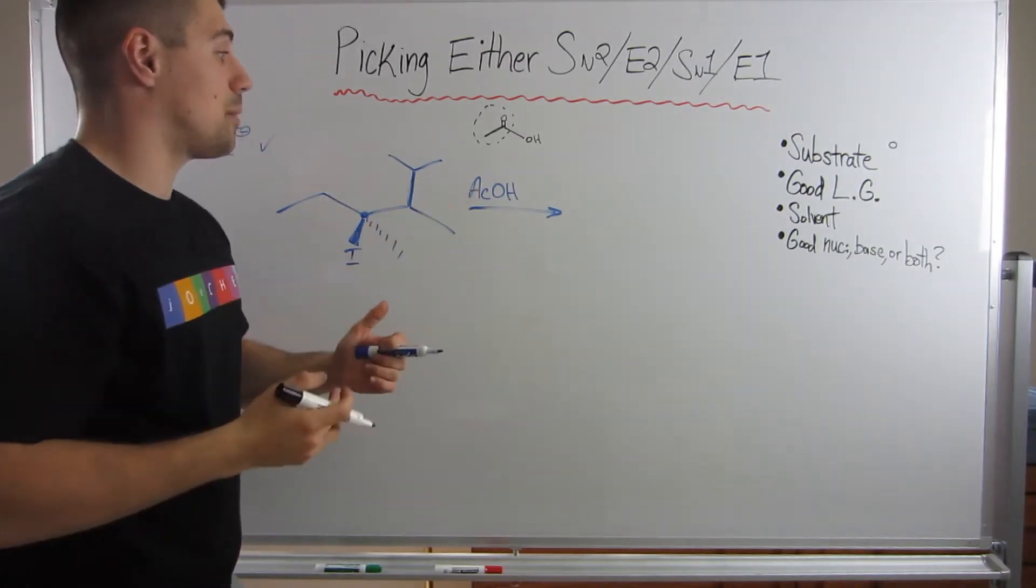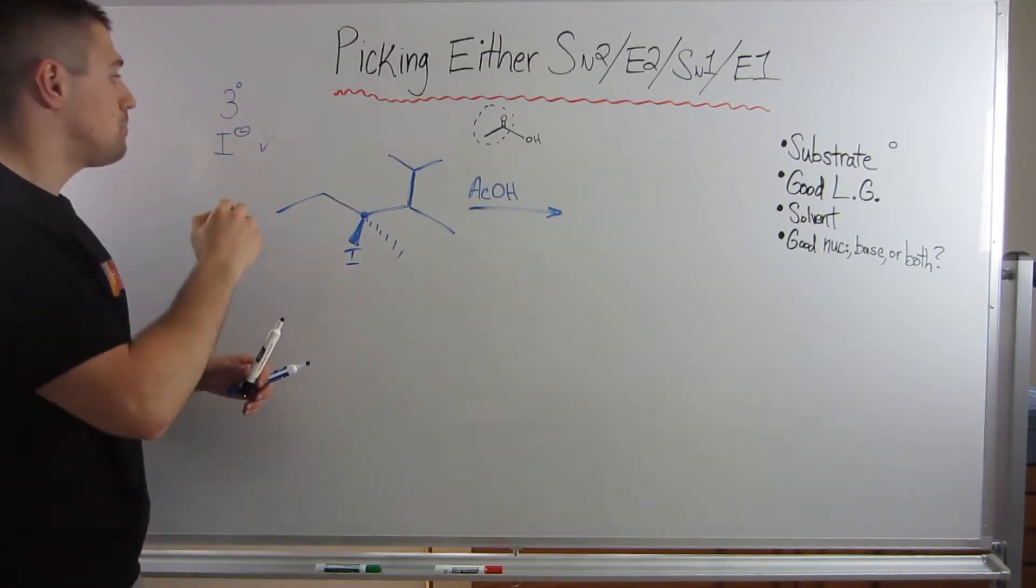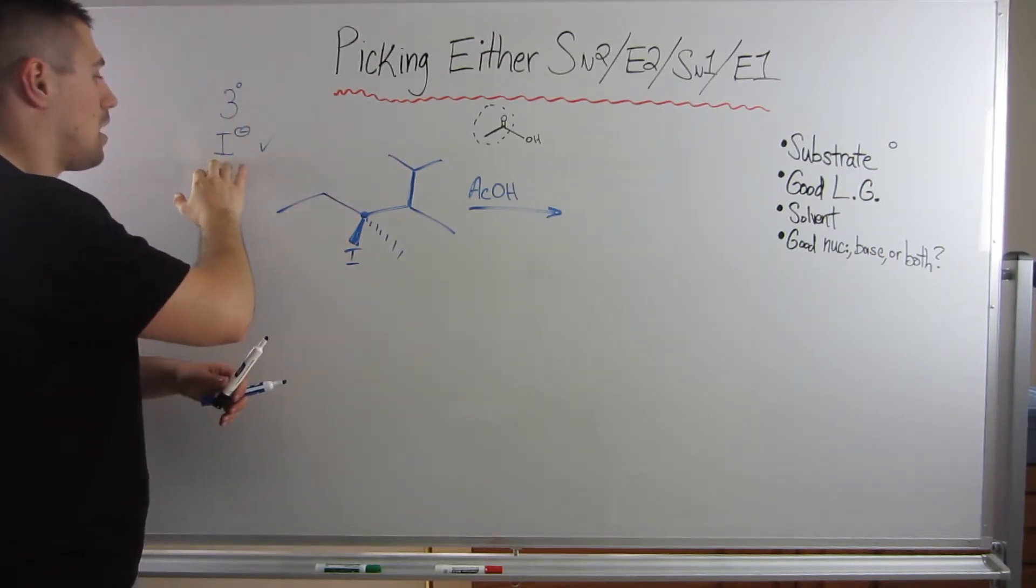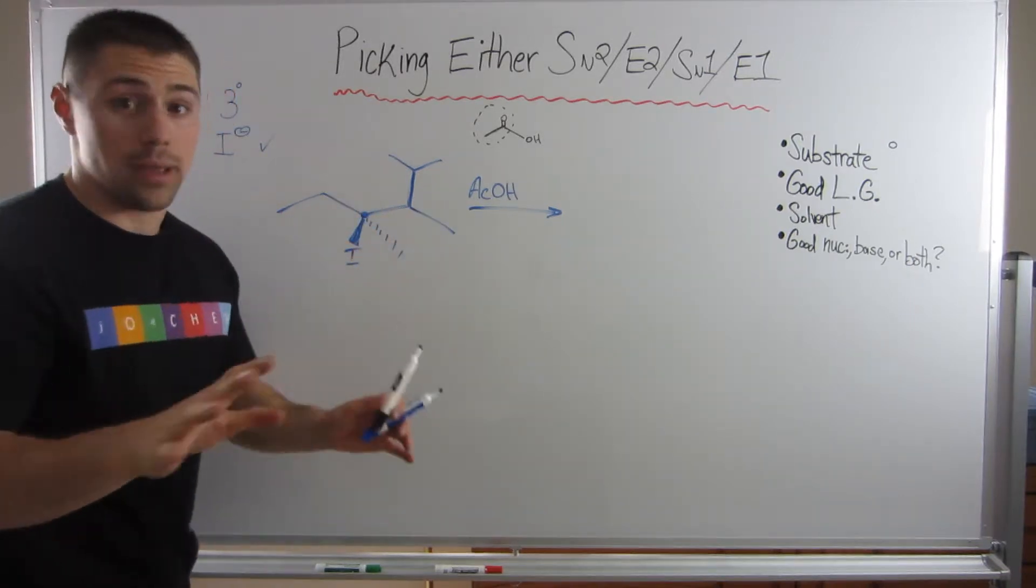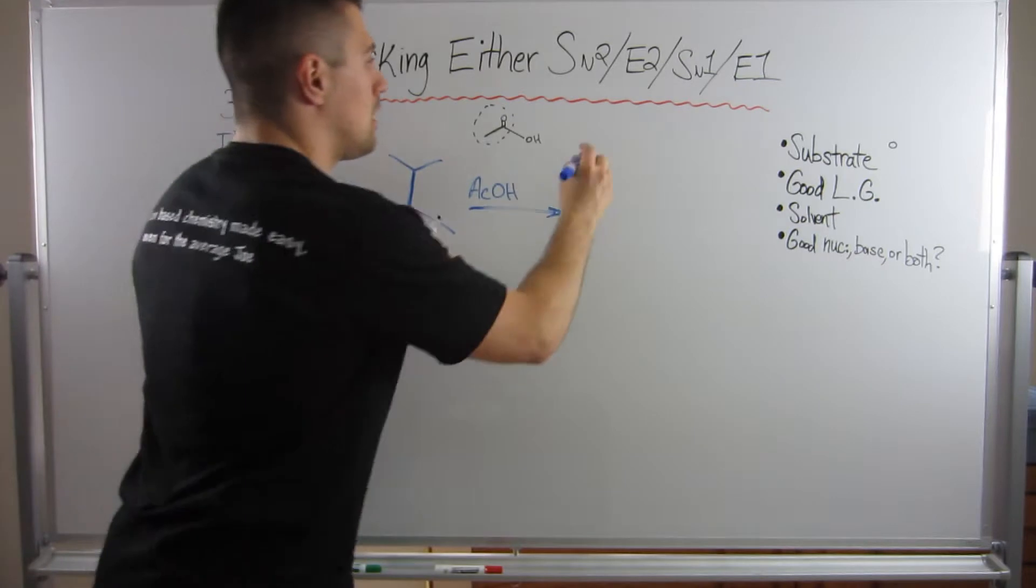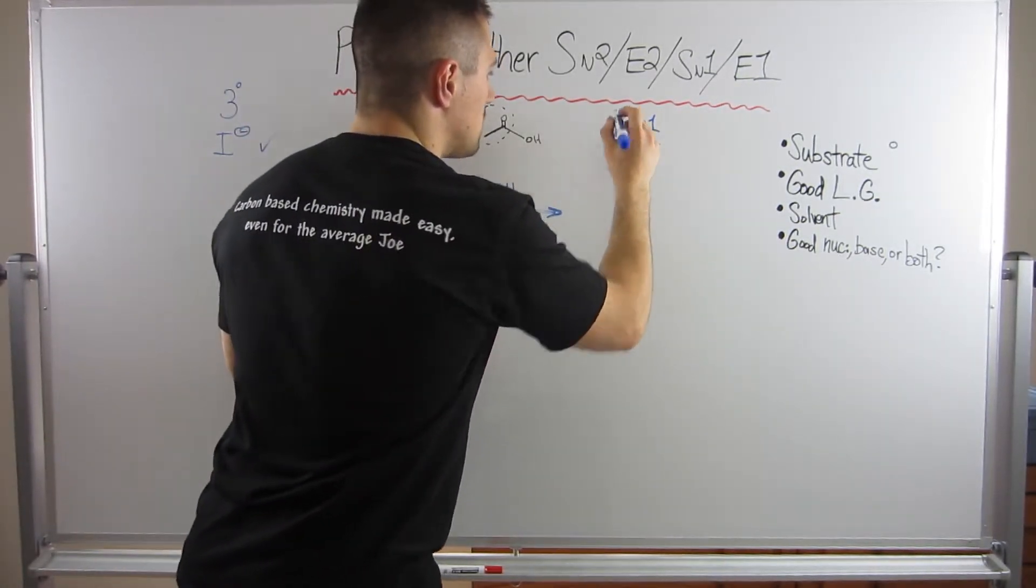And it's actually going to double up as a nucleophile. So given that we have a tertiary thing, tertiary substrate, scientific word thing, good leaving group, polar protic solvent, not a good base, right? This is going to be SN1. SN1 is what we're dealing with.